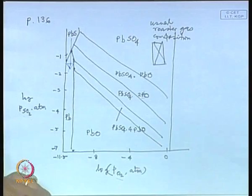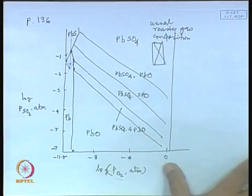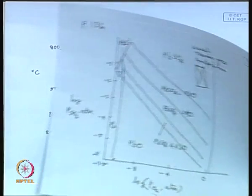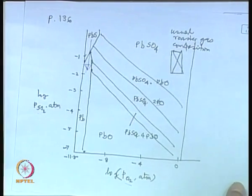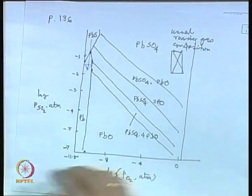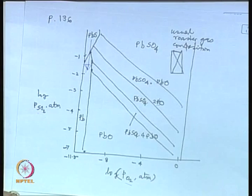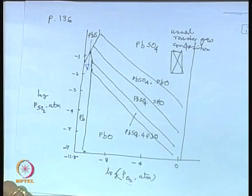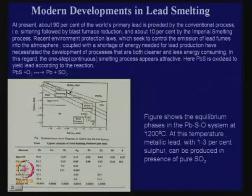That is the aim of some new developments people are trying. Of course, they have not been very successful yet as commercial processes, but if we could do that, we would make things very simple. We take lead sulphide in the reactor; it will produce lead and SO₂, which can be collected and go for acid recovery.